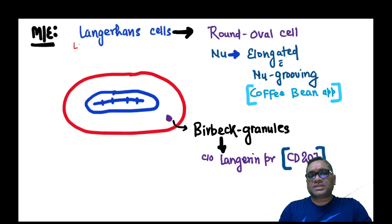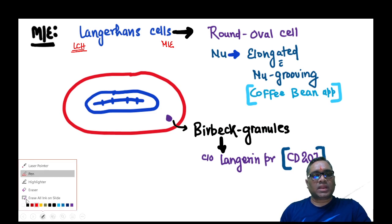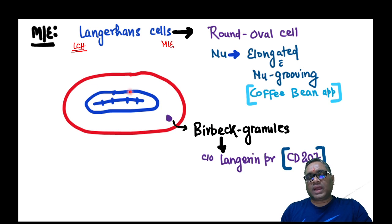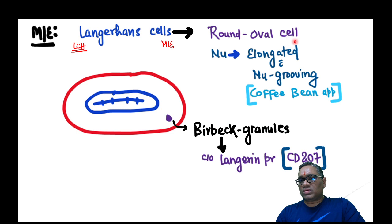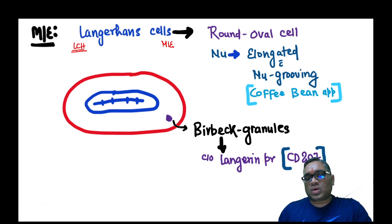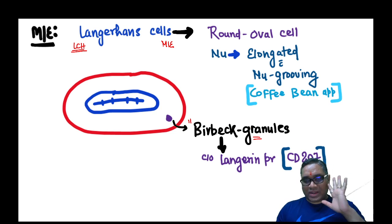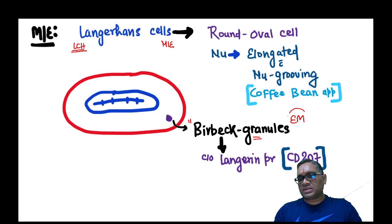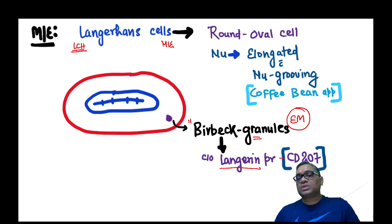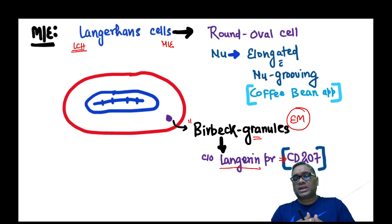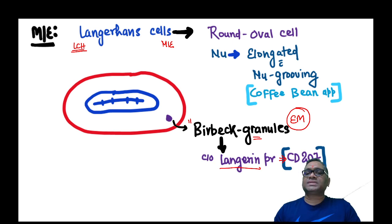In Langerhans cell histiocytosis, Langerhans cells on microscopic examination appear as round to oval cells with an elongated nucleus showing nuclear grooving, also called coffee bean appearance. The important granule to identify is the Birbeck granule. You cannot see this on light microscopy — it can only be seen under electron microscopy. These granules are made up of Langerhans protein, also identified by the CD marker CD207.